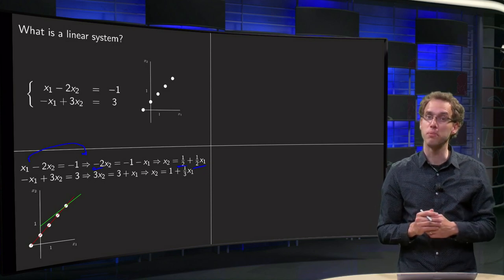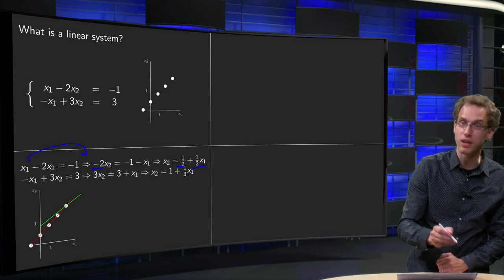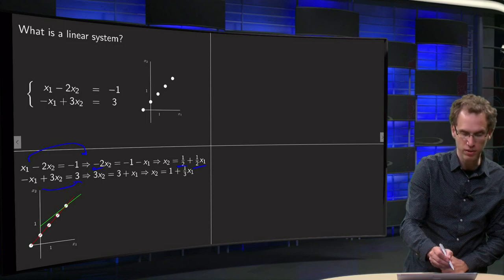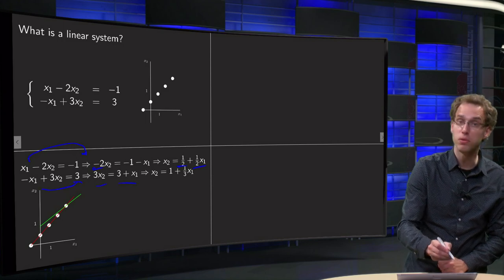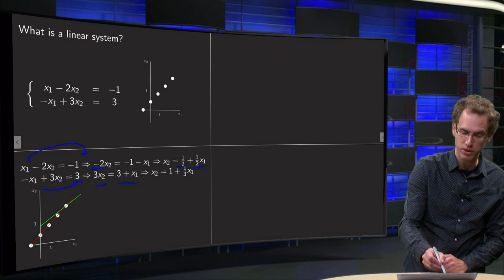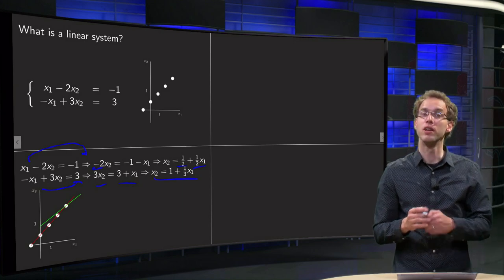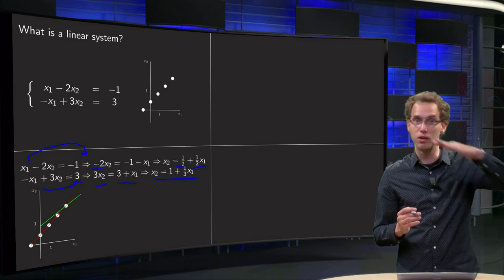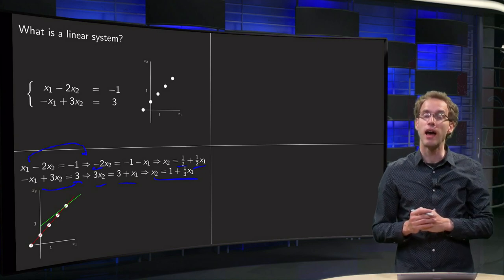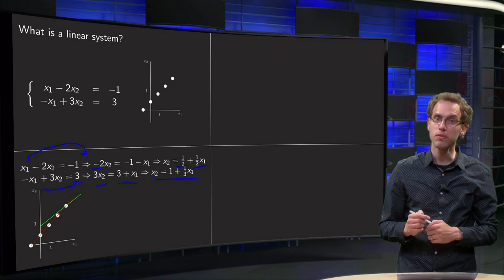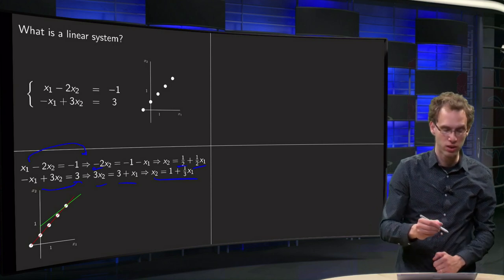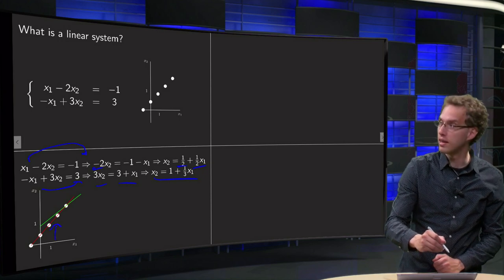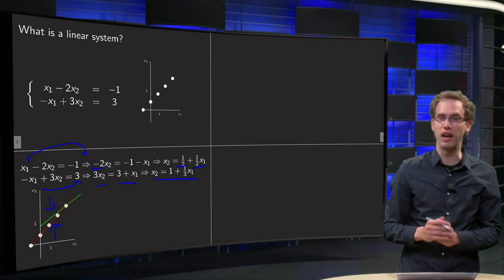We can do the same for the other linear equation and again solve for x2. Bringing x1 to the other side gives 3x2 equals 3 plus x1, and dividing by 3 gives x2 equals 1 plus 1 third x1. Again we have a line, now with slope 1 over 3 — slightly less steep — and an intersection at (0, 1). So here we have our two lines: the first linear equation as the red line, and the second linear equation as the green line.